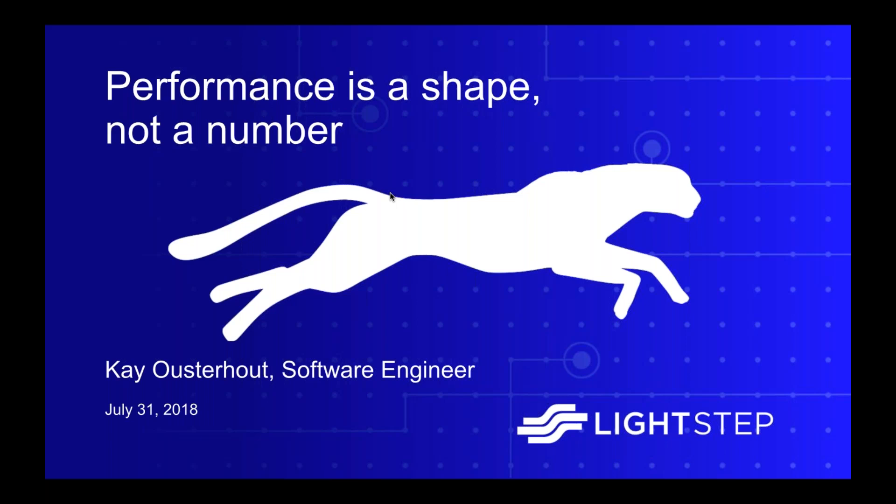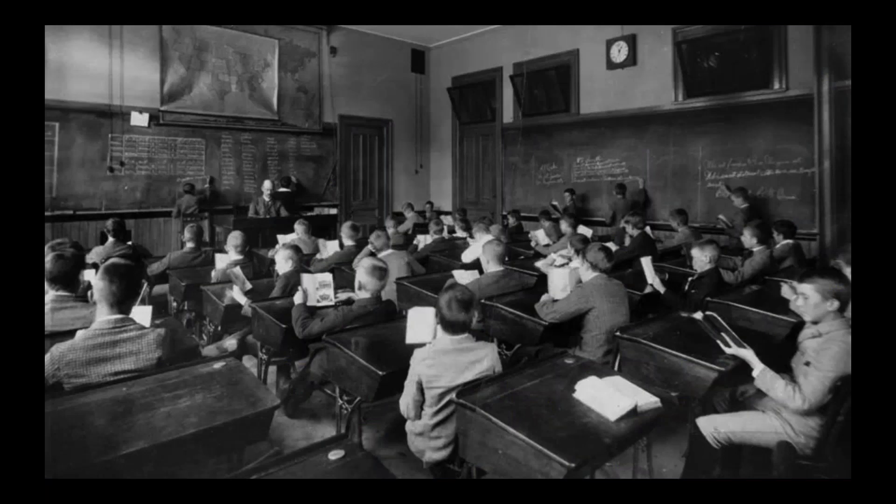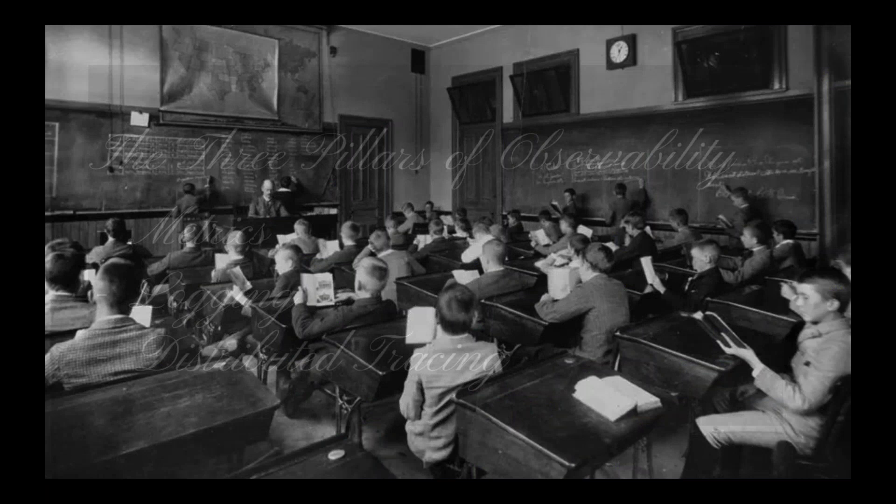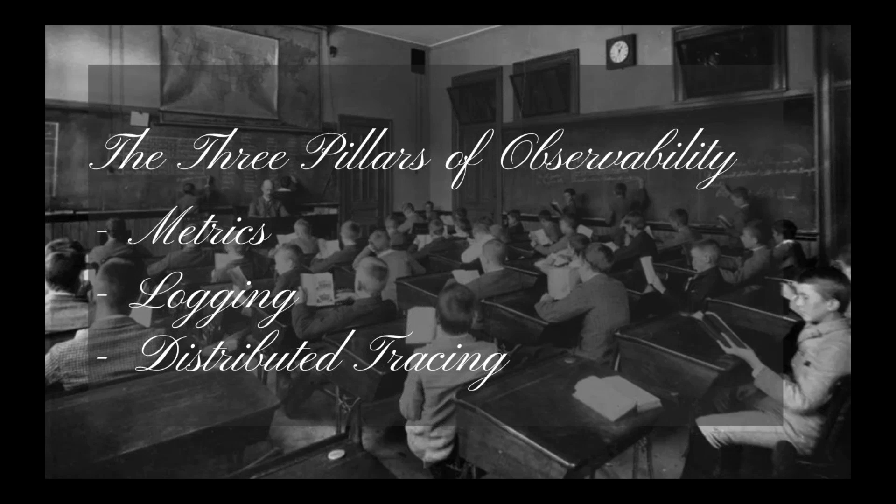Today we'll be talking about performance and specifically looking at how you can understand performance of complicated software systems. Typically, when you ask people what they do to understand performance, people respond with these three pillars of observability: metrics, logging, and distributed tracing. But then if you ask a follow-up question of whether they actually understand what's going on with their system, people often say no, and instead describe feeling crushed by all of these sources of data that they're trying to untangle.